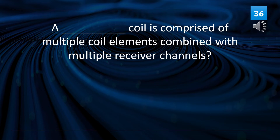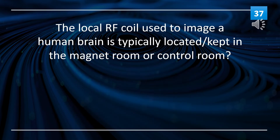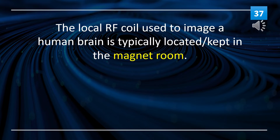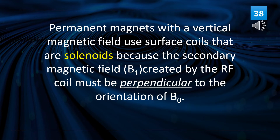A phased array coil is comprised of multiple coil elements combined with multiple receiver channels. The local RF coil used to image a human brain is typically located or kept in the magnet room. Permanent magnets with a vertical magnetic field use surface coils that are solenoids, because the secondary magnetic field B1, created by the RF coil, must be perpendicular to the orientation of B0.